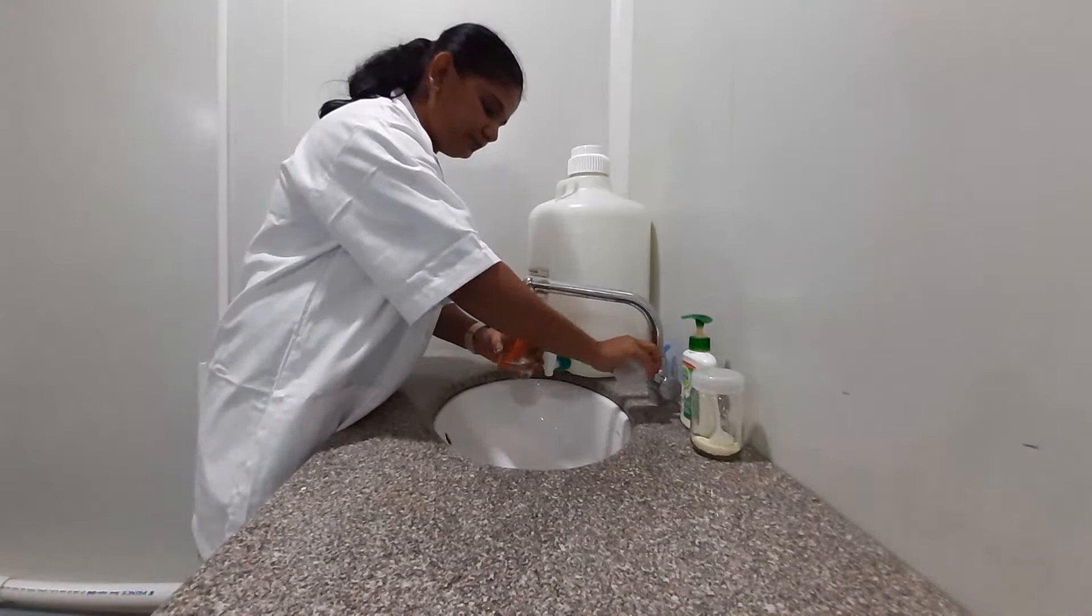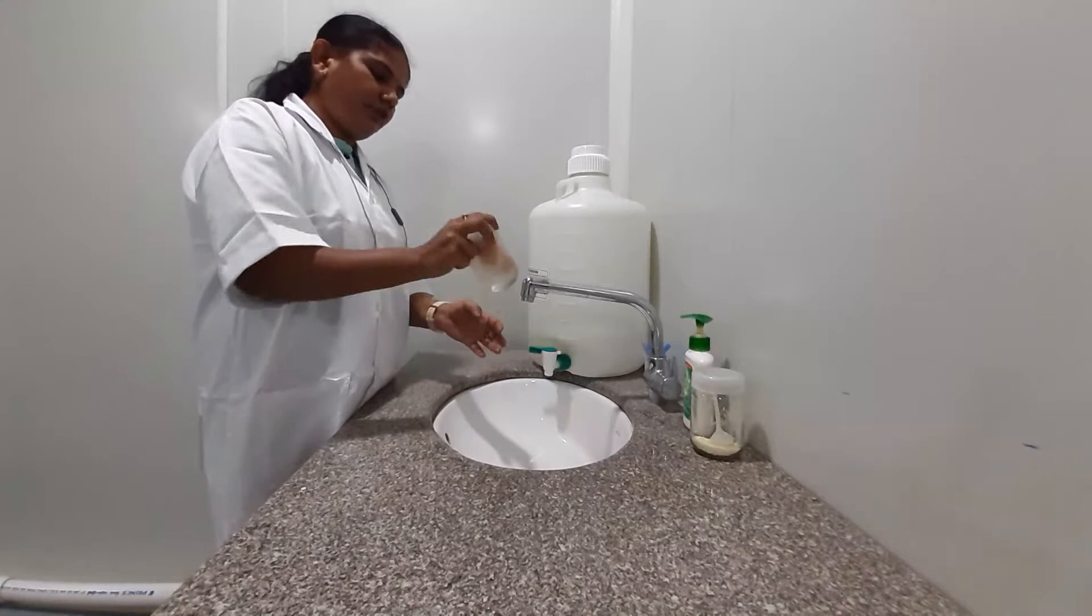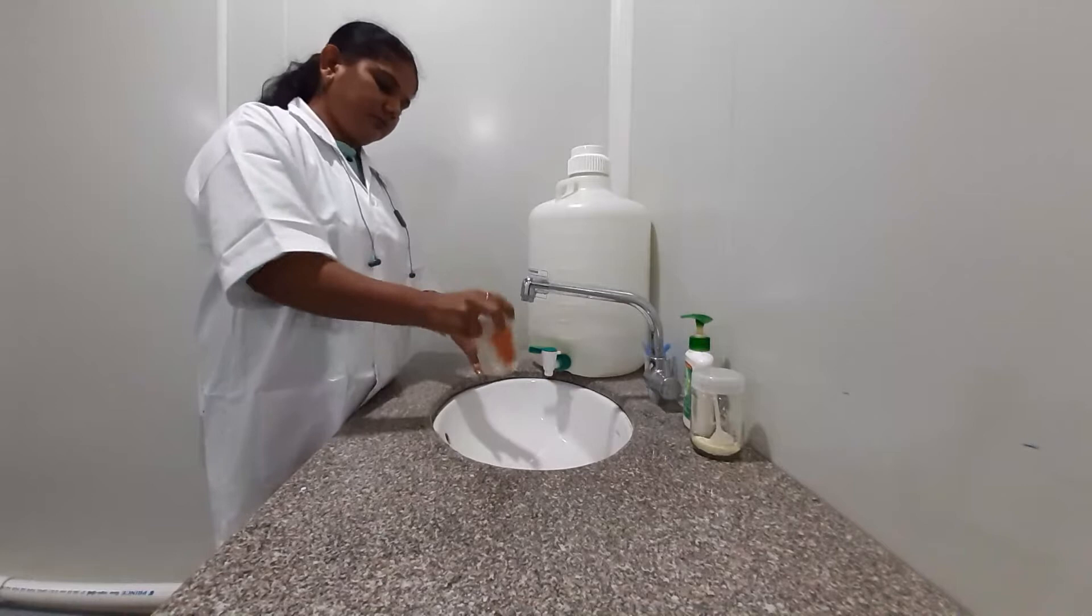First, we need to wash it under tap water to remove all dirt from its surface. Ten minutes of washing will be carried out in order to remove the dirt on the surface of carrot tissue.